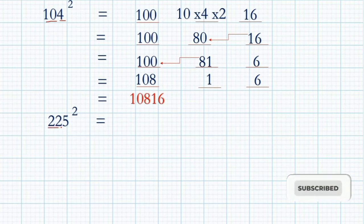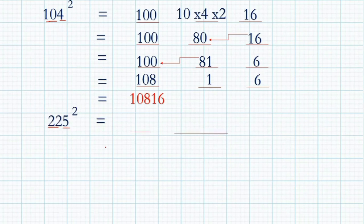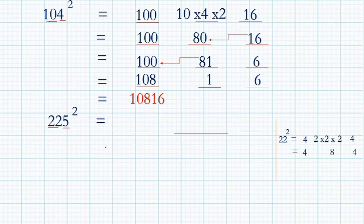Next question: 225 squared. Here also you should divide into two parts: 22 and 5. Five squared you should write in the last and 22 squared in the first. First you have to find 22 squared the same way: two squared is 4, in the middle two into two into two is 8, and first is 4. So 22 squared is 484.